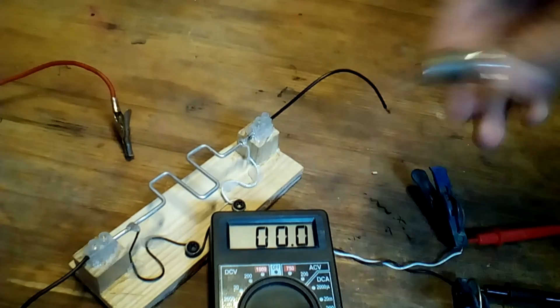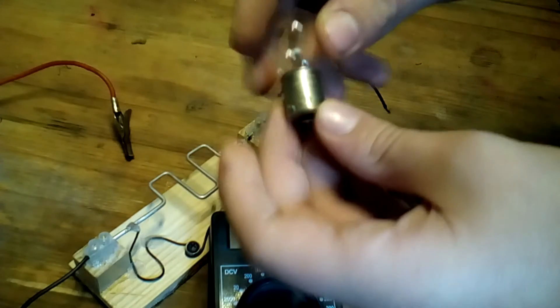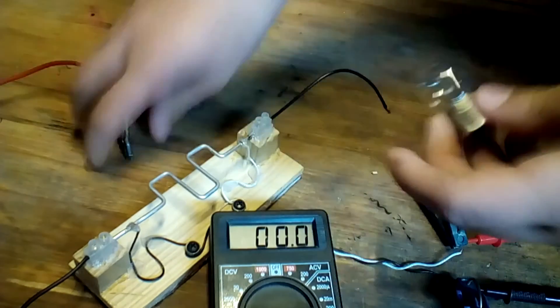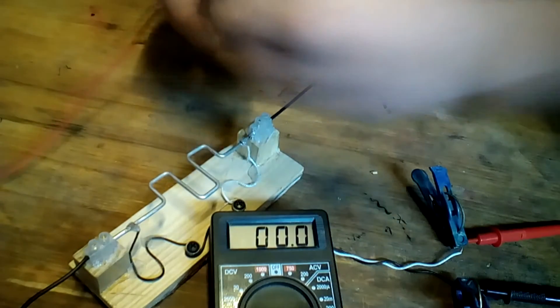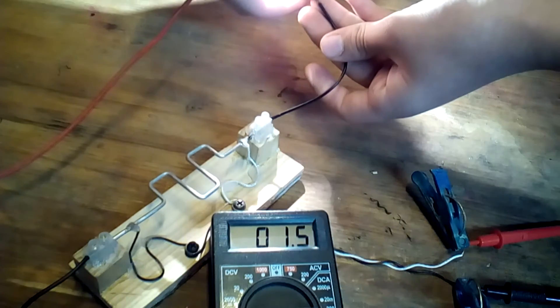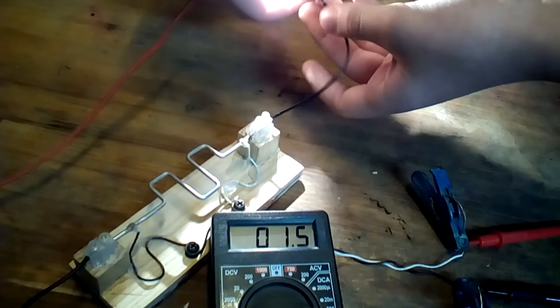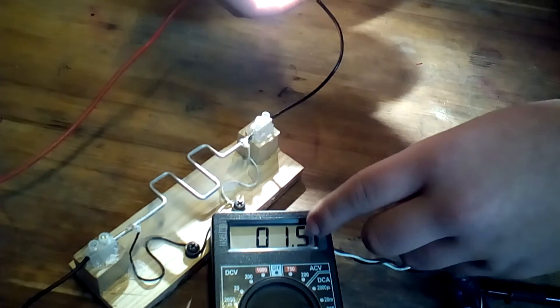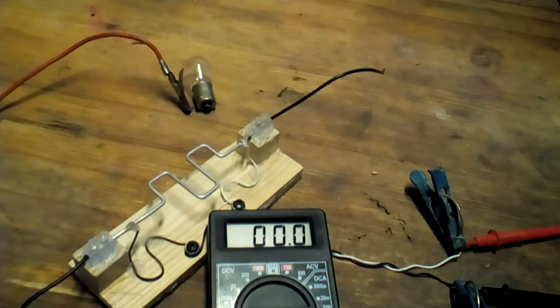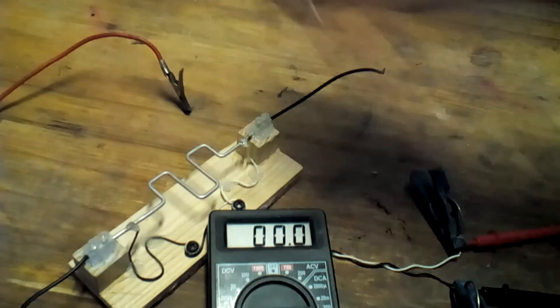So I will test a regular 21 watt bulb, 12 volts. You see, it's drawing 1.5 amps. It measures 1.5 amps in this bulb.